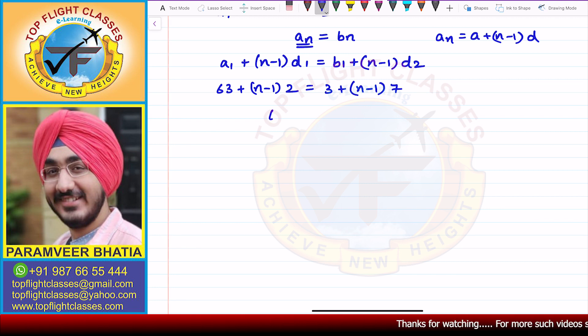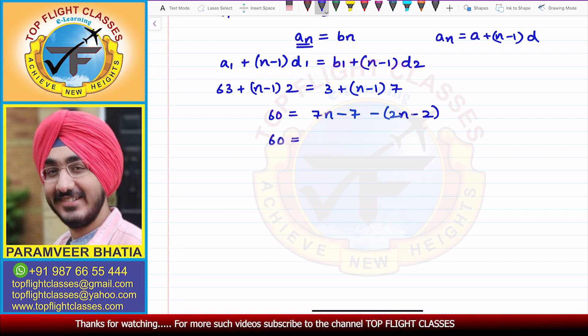So here what I get is 60 is equal to 7n minus 7 minus 2n minus 2. So now what we have here? That 60 is equal to 7n minus 2n minus 7 plus 2. So here we have that 60 and this is minus 7 plus 2, which is minus 5.